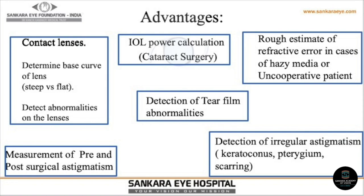The keratometer is also used for detection of irregular astigmatism in cases like pterygium, corneal opacity or scarring, and in ectatic disorders like keratoconus. However, it does not give reliable values in advanced cases of ectatic disorders.